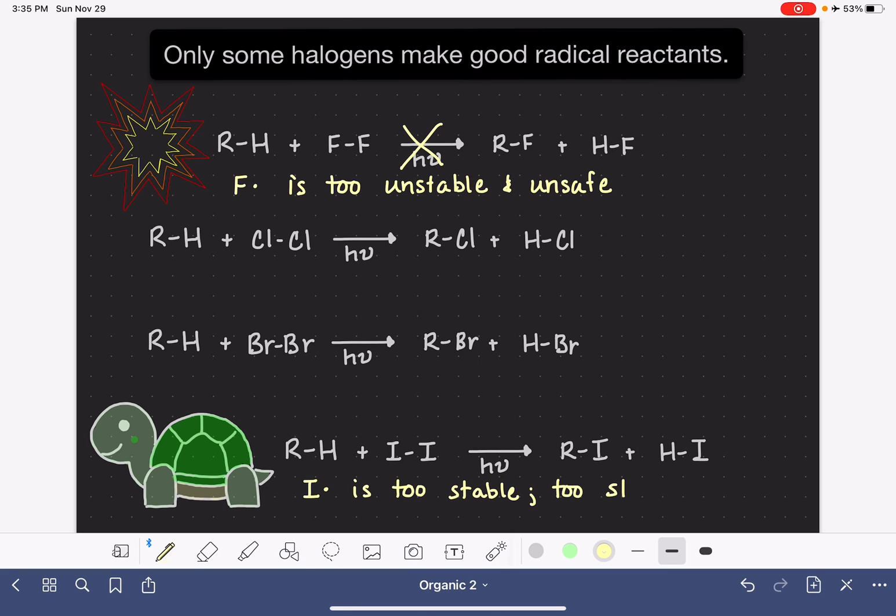It is so slow to react that it is essentially like no reaction is even taking place. So both the iodine and fluorine molecules as halogens are generally not used in the free radical halogenation process. Instead, we focus on using chlorine and bromine.